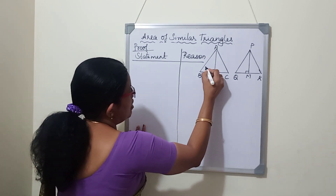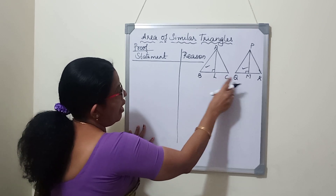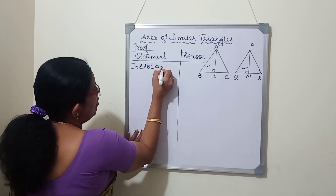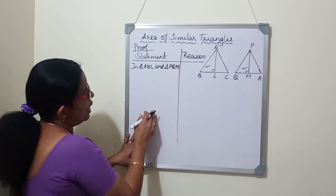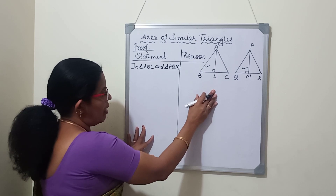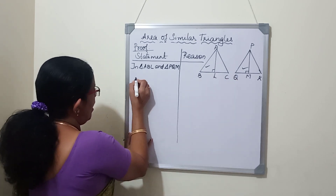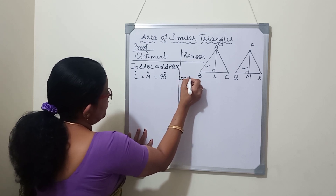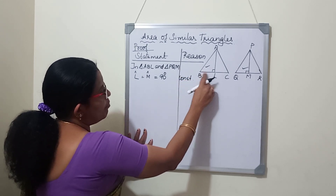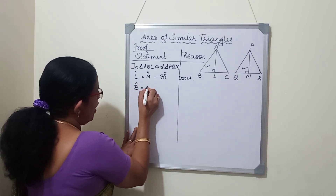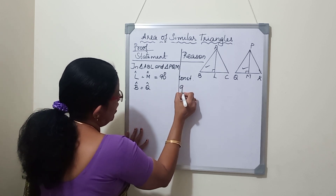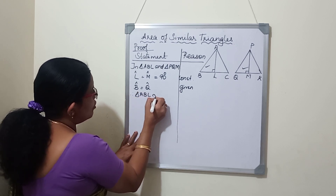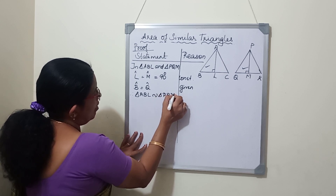In the proof, we will consider triangles ABL and triangle PQM. We will prove that these two triangles are similar. Angle L is equal to angle M, which is 90 degrees - reason: construction. Next, angle B is equal to angle Q because the triangles ABC and PQR are similar - reason: given. So two angles are equal. Therefore triangle ABL is similar to triangle PQM by AA criteria.